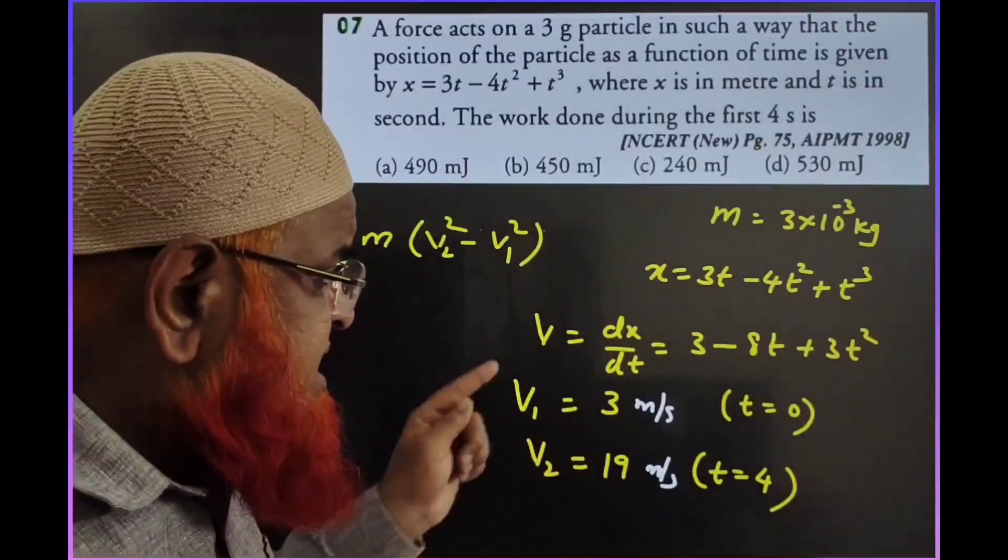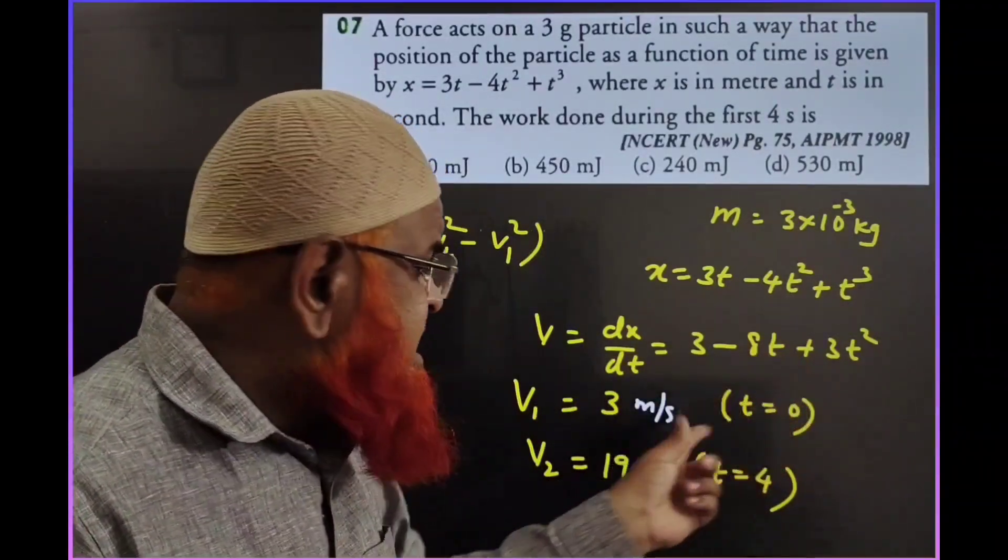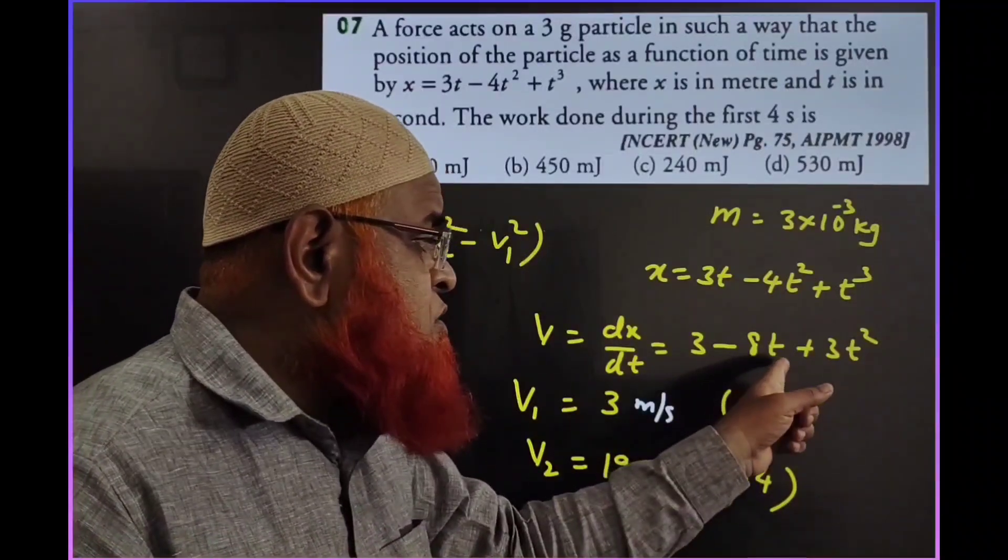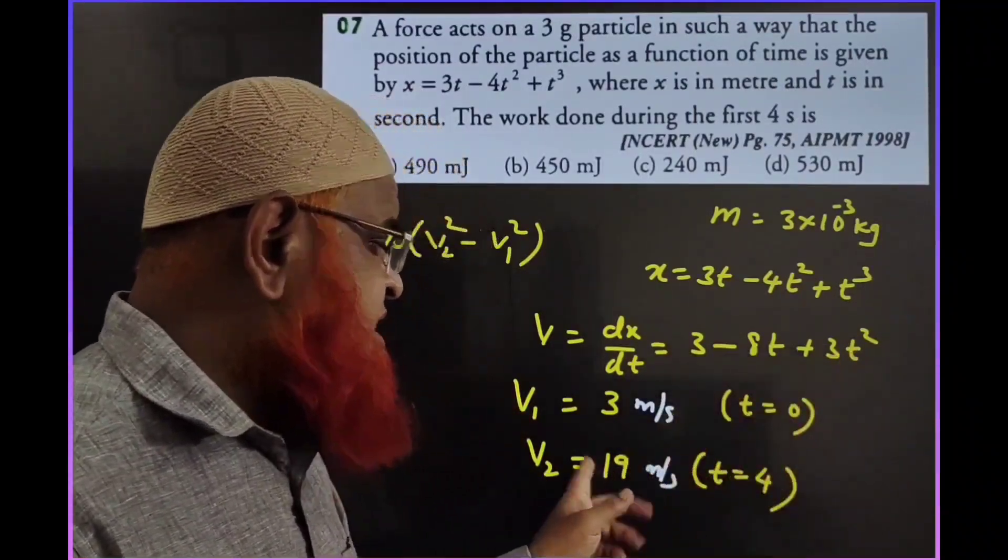Then I take time t = 0 and substitute to get v₁ = 3 m/s. Again, I take t = 4 and substitute to get v₂ = 19 m/s.